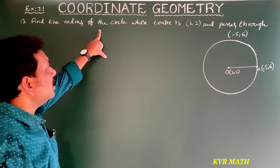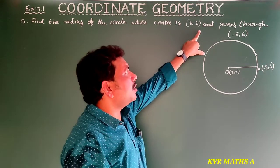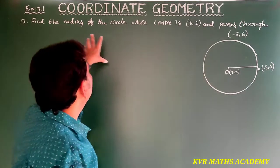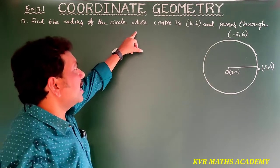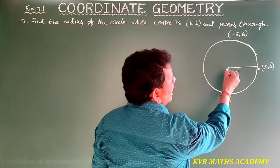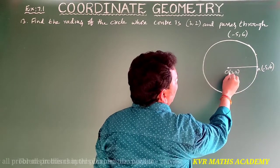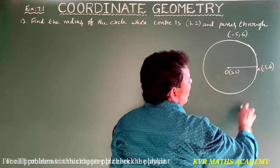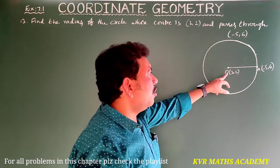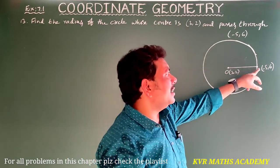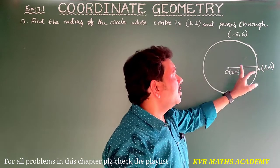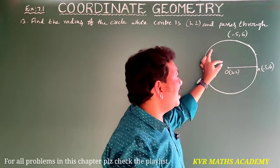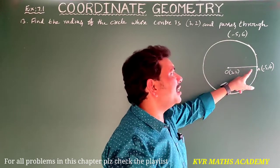See, this is the 13th question: find the radius of the circle whose center is (3, 2) and passes through (-5, 6). Center (3, 2) is given and it passes through point A at (-5, 6). Here O is taken as the center and A is the point on the circle, so we have to find the radius — the distance between points O and A.